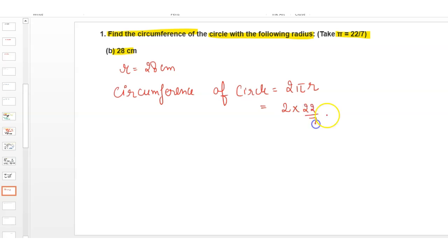Using π = 22/7 and r = 28. The 7 divides into 28 giving 4, so it becomes 2 × 22 × 4. 2 × 4 = 8, then 8 × 22 = 176 cm. So your answer